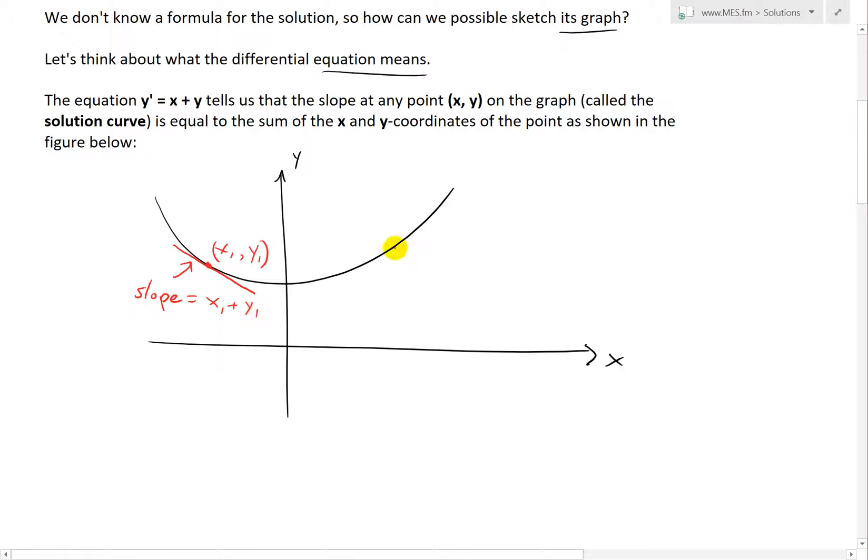Similarly, if we had the point right here, let's say this is (x₂, y₂), then at this point right here, if you draw a tangent line to get the slope, this has a slope of x₂ + y₂.